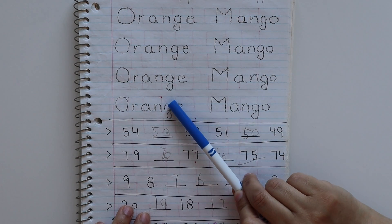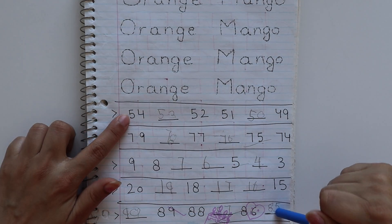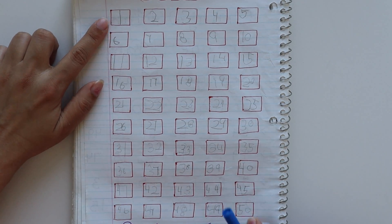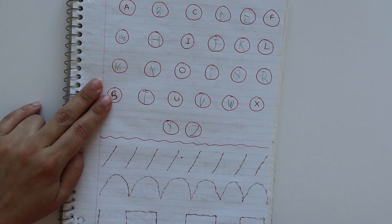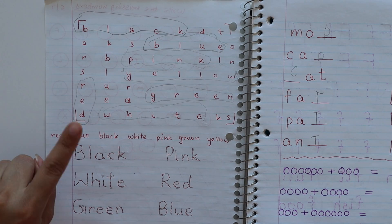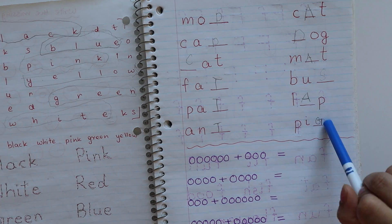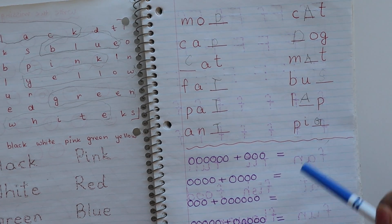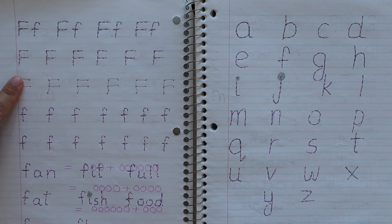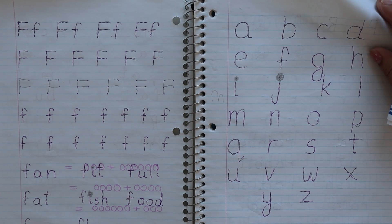Now tracing practice of orange and mango. Missing number worksheet from 54 to 85. Number writing practice from 1 to 50 again. Another missing letter worksheet below. Some patterns for tracing. Then one more word search activity for color names, and one more worksheet for CVC words.